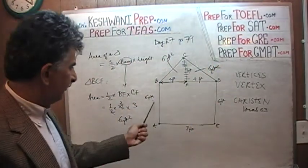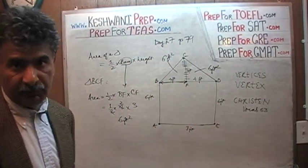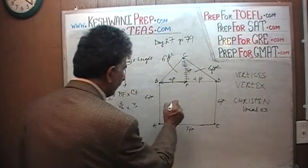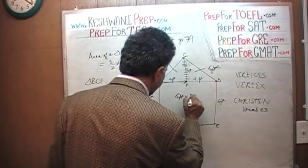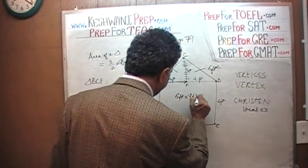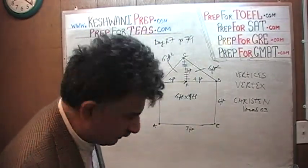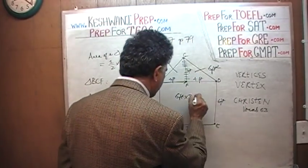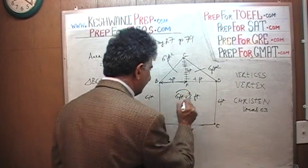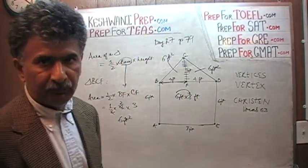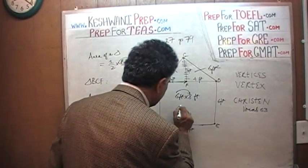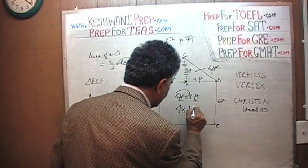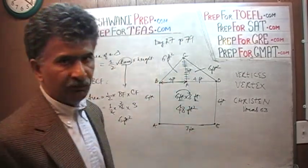The last thing we have to figure out is the area of the rectangle, which is quite straightforward. It's just 6 by 8 — 6 feet by 8 feet. And of course 6 times 8 is 48, and feet times feet gives us 48 square feet.